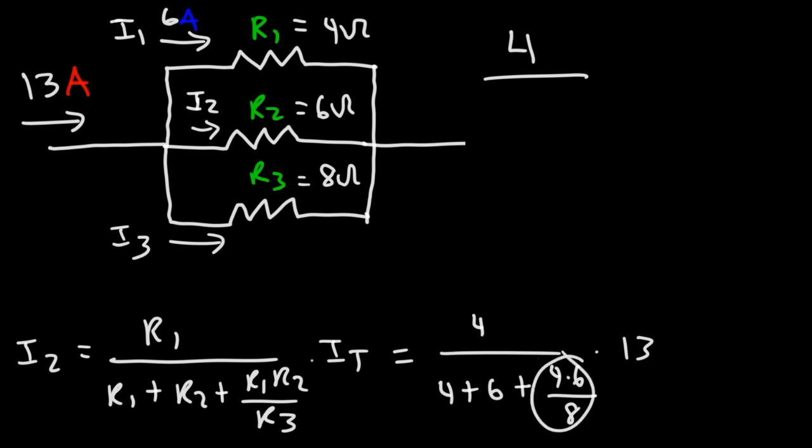Now, this is the same. 4 times 6 is 24 divided by 8, that's 3. And then 4 plus 6 is 10. 10 plus 3, that's 13. So this will give us 4. So I2 is 4 amps.